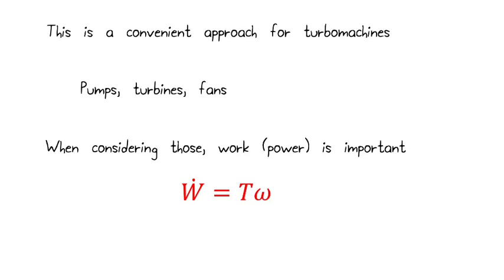So it turns out that this approach is very convenient, and we'll see it a lot when we analyze turbo machines, which are a category of devices that include pumps, turbines, fans, and things like that. So in terms of alternative energy, we might be talking about a wind turbine or a hydraulic turbine that produces power. And we use this word power. That's very important in that type of analysis. We represent that with W dot, the rate of work, and we know this expression, that that's equal to the torque times the angular velocity.